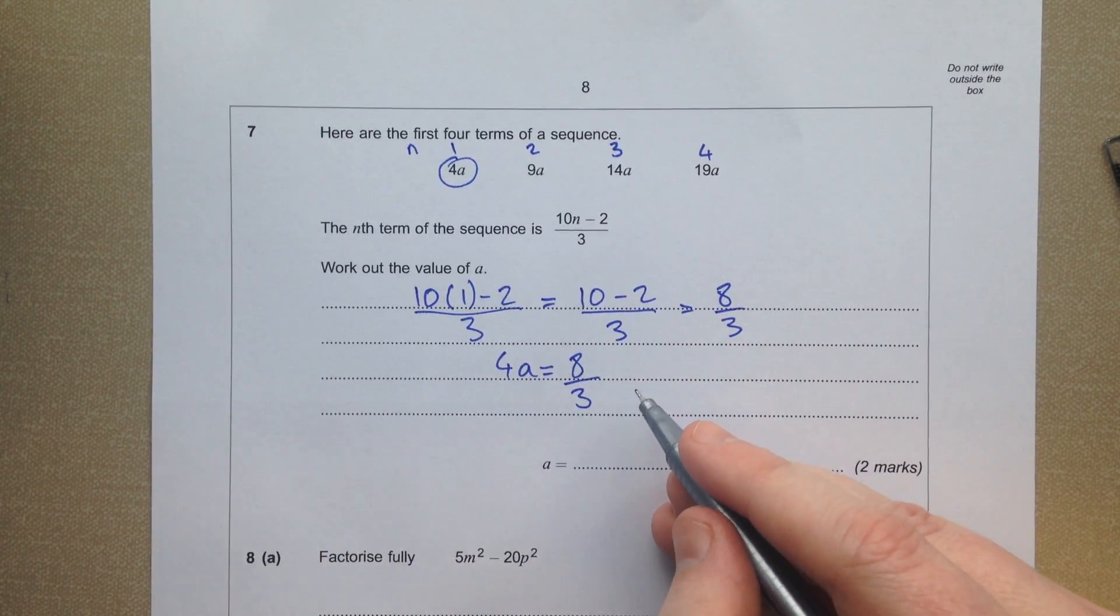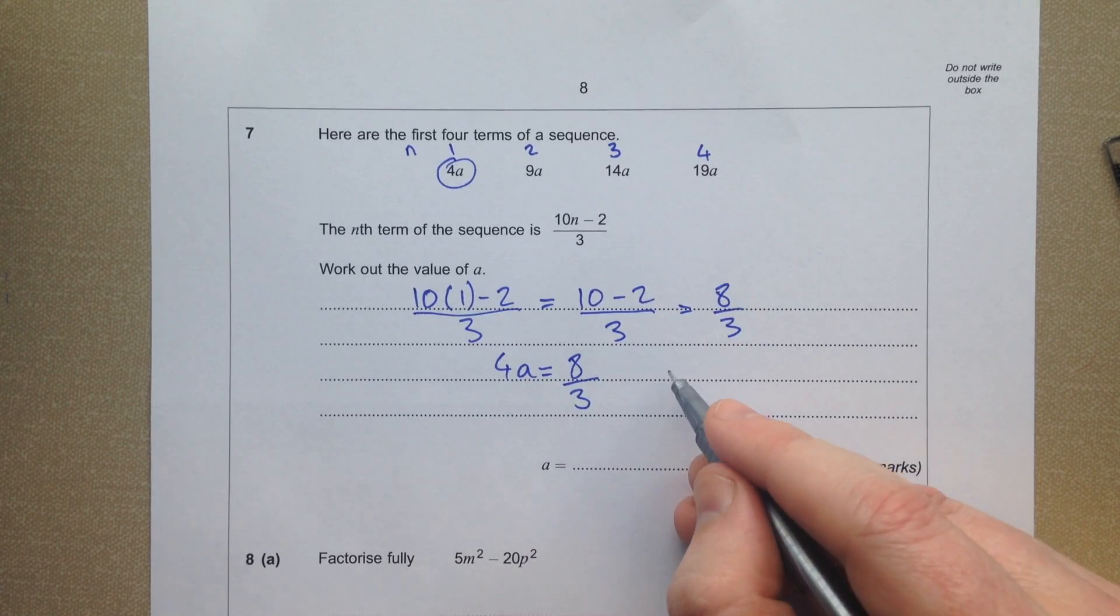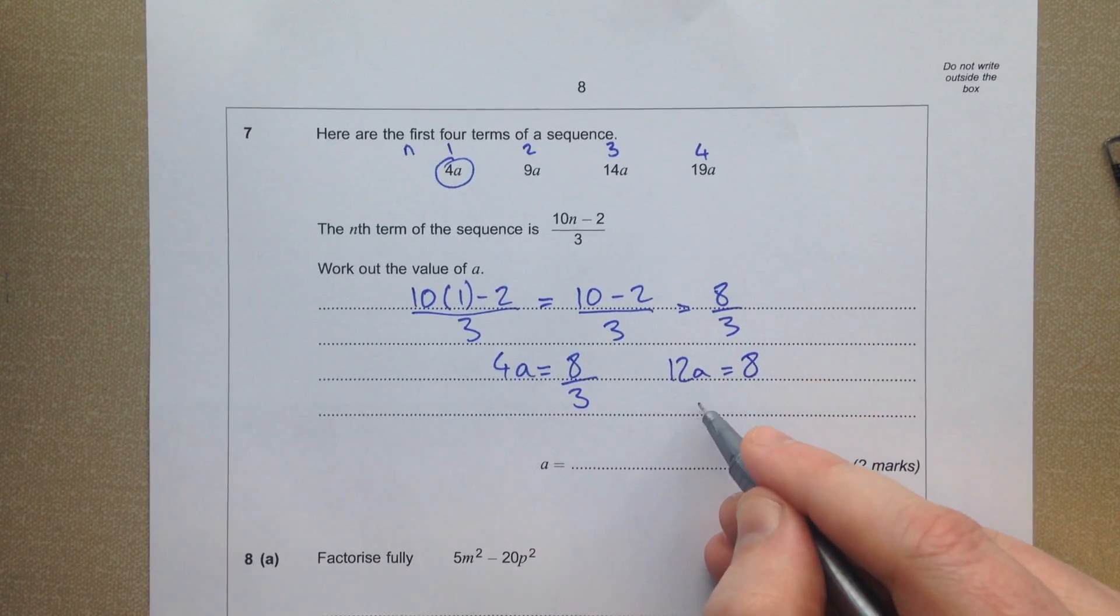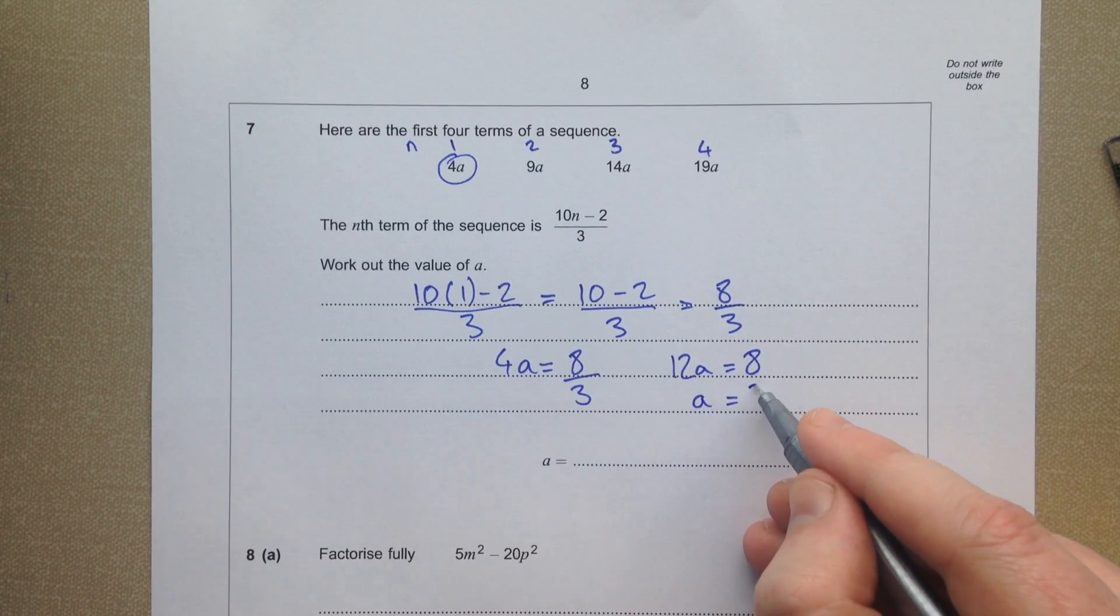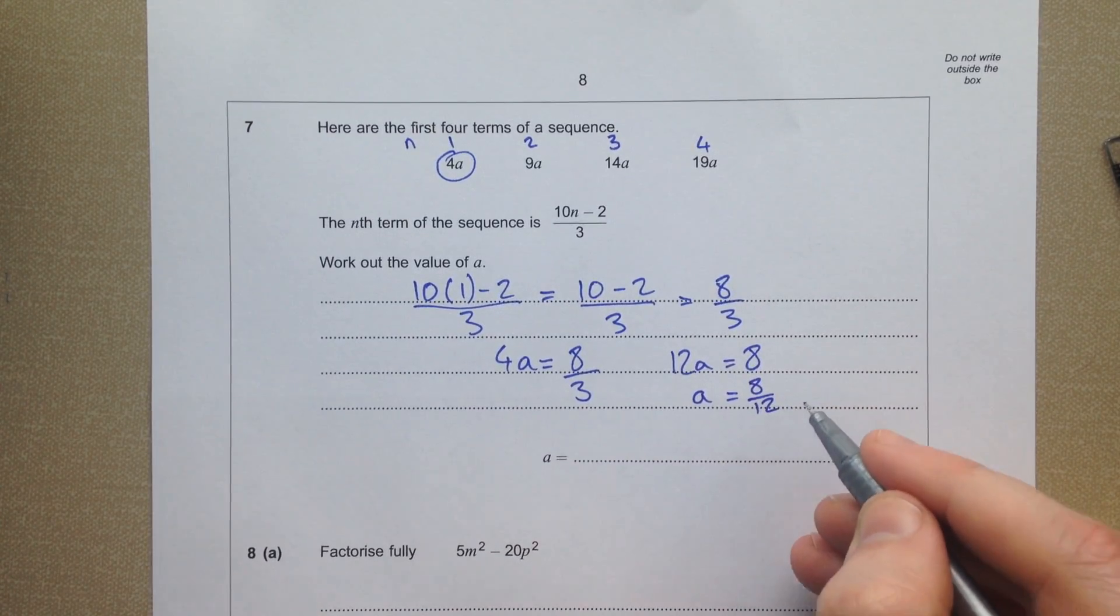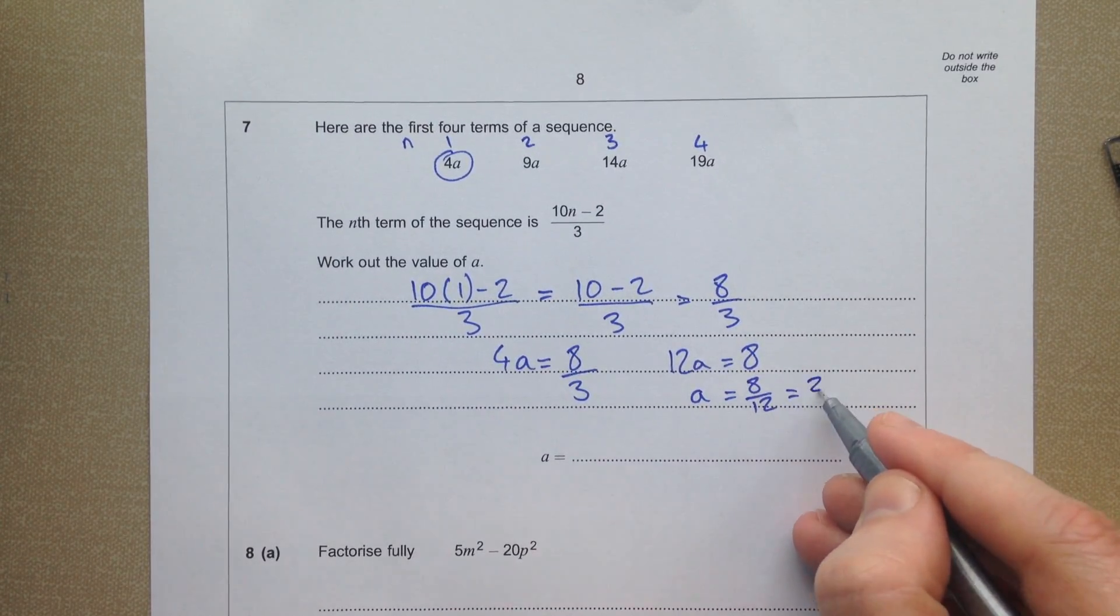Times both sides of that equation by 3, I get 12a equals 8, and divide both sides by 12, that's 8 over 12. So that will be 2 thirds, more simply.